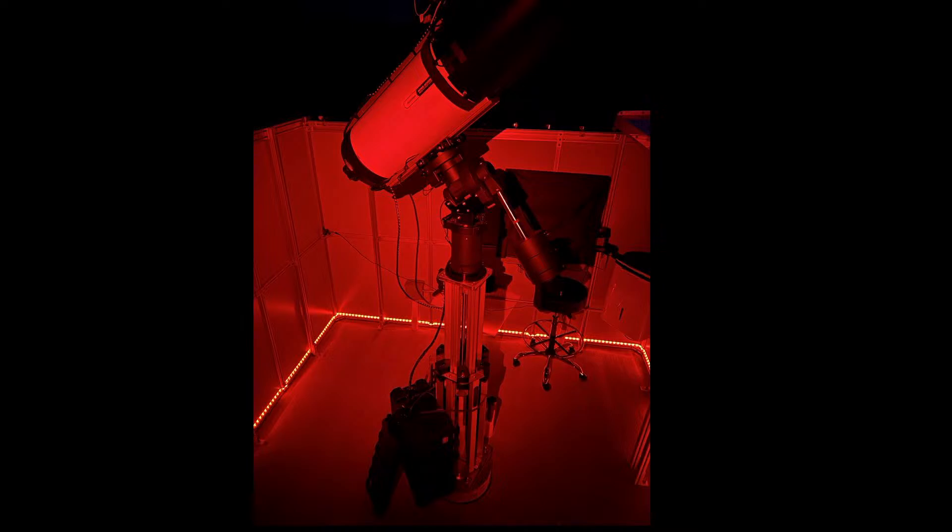That Rasa 11 is connected to a ZWO ASI 2600MC Pro color camera. You can see that the camera actually takes the place of our eyepiece, and what that permits us to do is observe the telescope together with you.